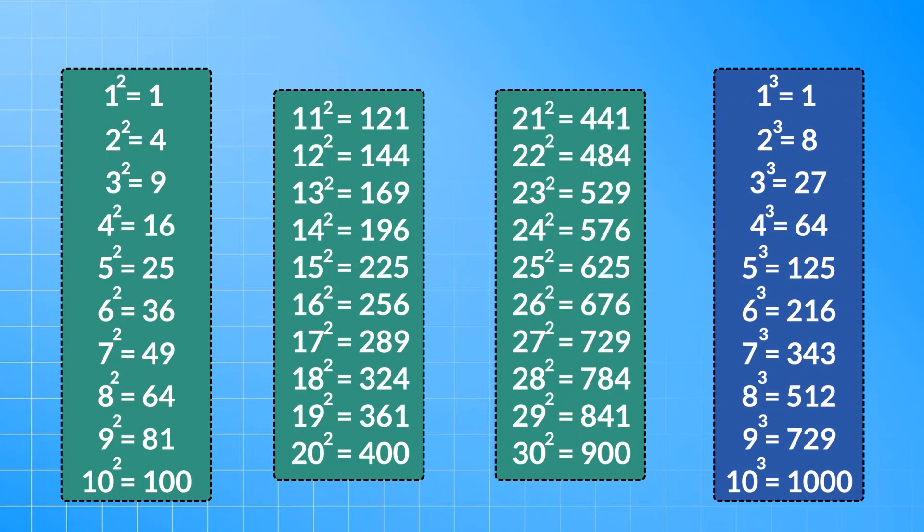Look at this question: 1, 8, 27, 64, question mark. These numbers are perfect cubes — 1 cubed is 1, 2 cubed is 8, 3 cubed is 27, 4 cubed is 64. So your answer should be 5 cubed, that is 125. To solve difficult questions on squares and cubes, you need the squares chart from 1 to 30 and the cubes chart from 1 to 10. You have to memorize all these numbers because without them you cannot solve the tougher questions.